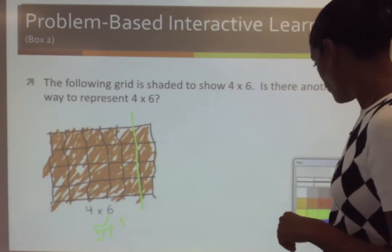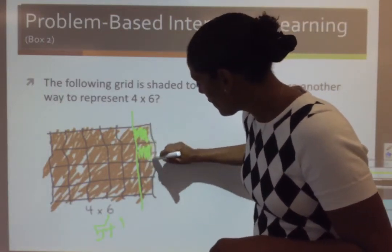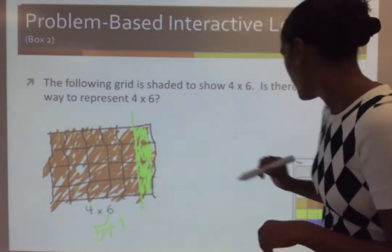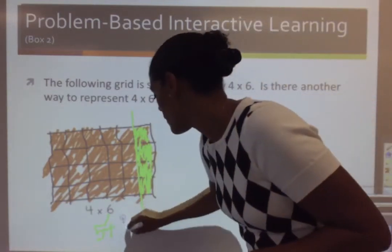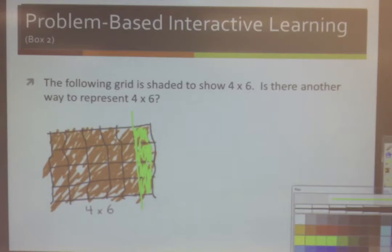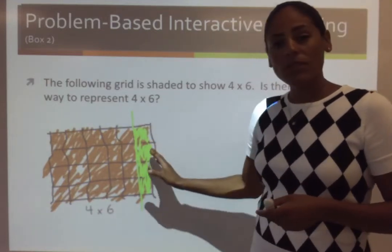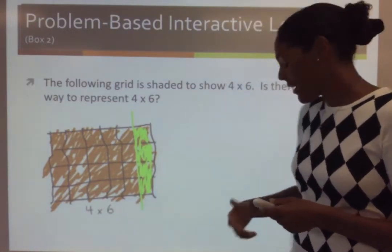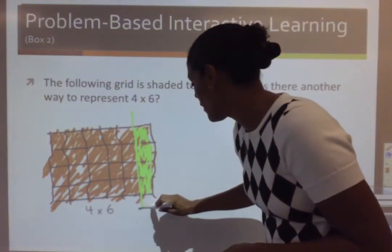So what I would do is, I'm going to go ahead and I'm going to shade this side green. Now that I've shaded this column green, I need to represent 4 times 6 in a different way. I need to write a new equation. So I'm going to write it over on this side.